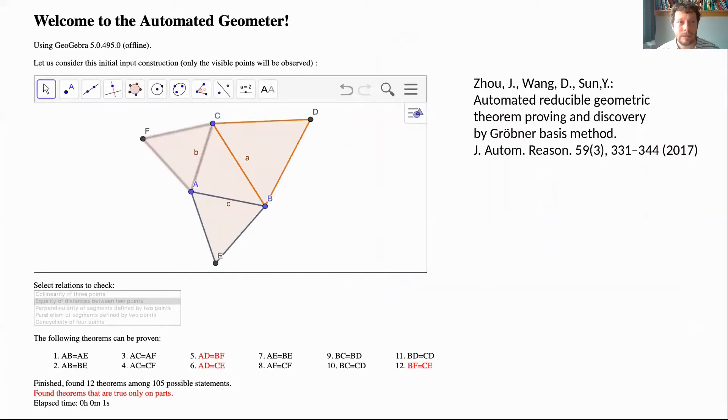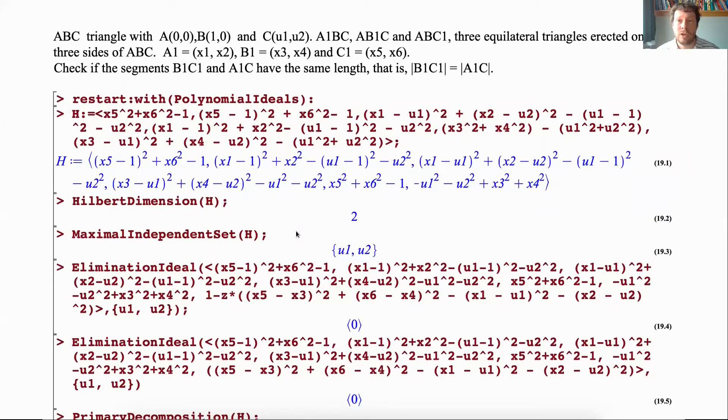Another example is from a paper by Zhou, Wang, and Sun. We have a triangle and build regular triangles on top of the sides. We want to see if the lengths of AD and PF are equal to each other. We can obtain this information in the automated geometry web version using red colors to show these statements are true only on parts. Maple can do the same, and it's very interesting that the primary decomposition is not possible because it's too complicated, but we don't need it because we can learn the statement is true on parts by obtaining these two results.